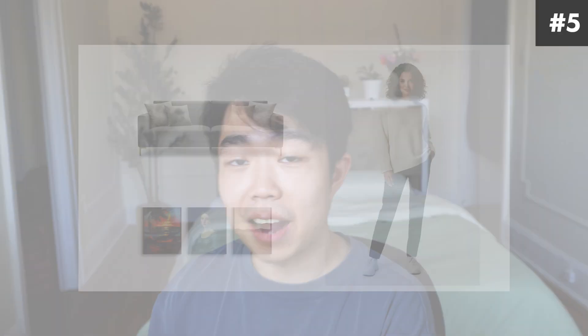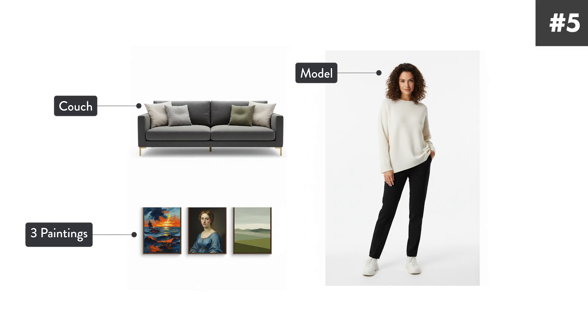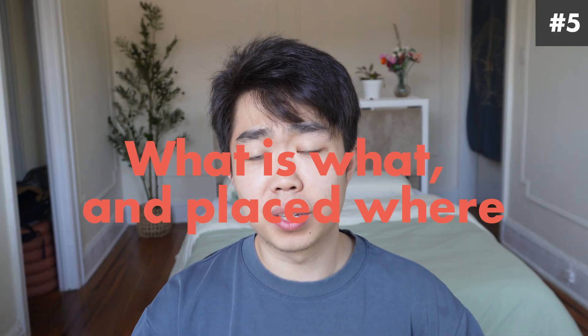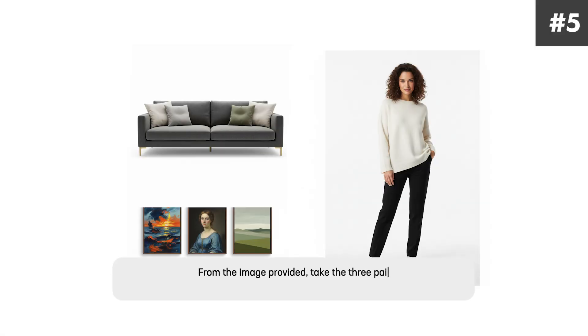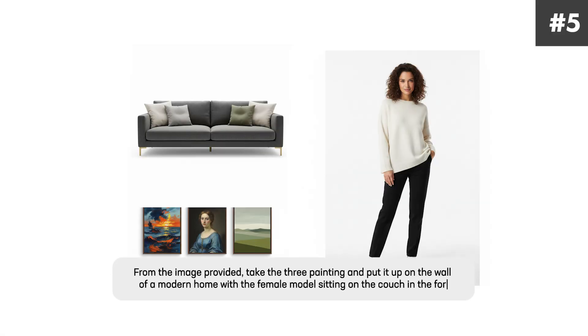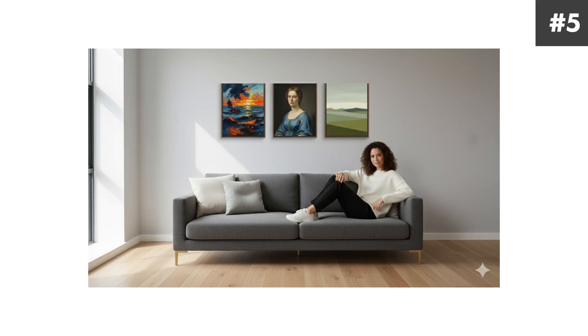This next one really blew my mind. Say you have a number of products you want to advertise and put onto a design you're trying to publish. Here I have a picture of a couch, a picture of a model, and a picture of three different paintings. The best method is to have all subjects and objects on a white background separated. Similar to the other combining examples, we need to tell Gemini what is what and placed where. My prompt was: 'From the image provided, take the three paintings and put them up on the wall of a modern home with a female model sitting on the couch in the foreground.' And this is what it spat out — exactly how I wanted everything placed.